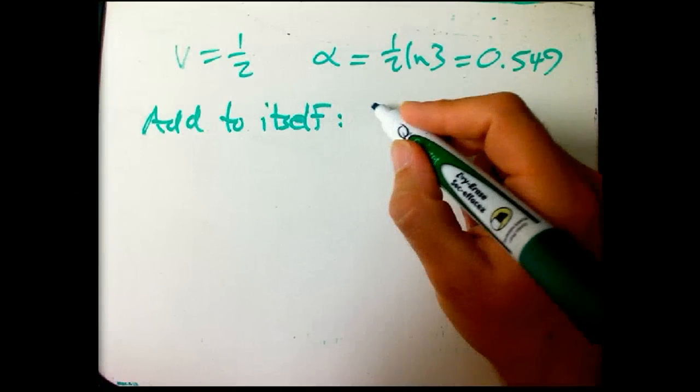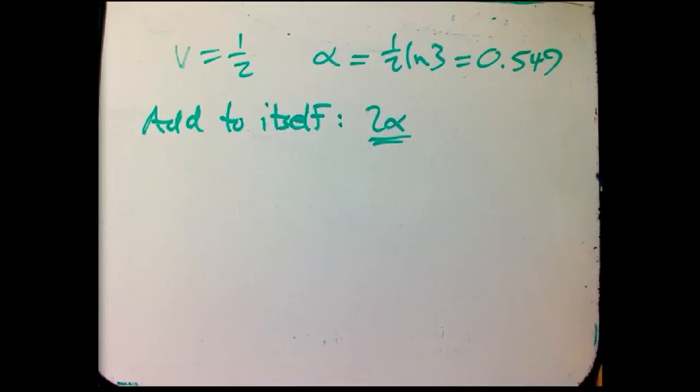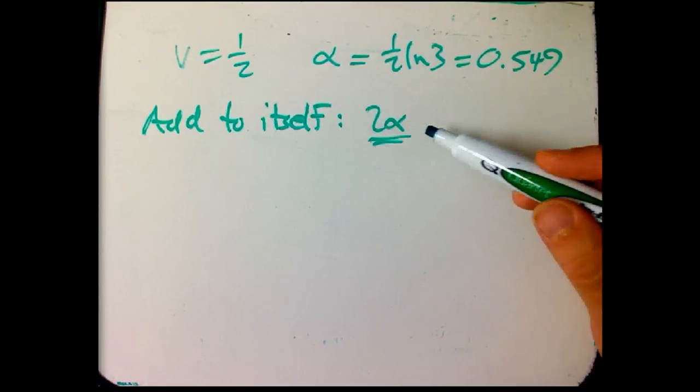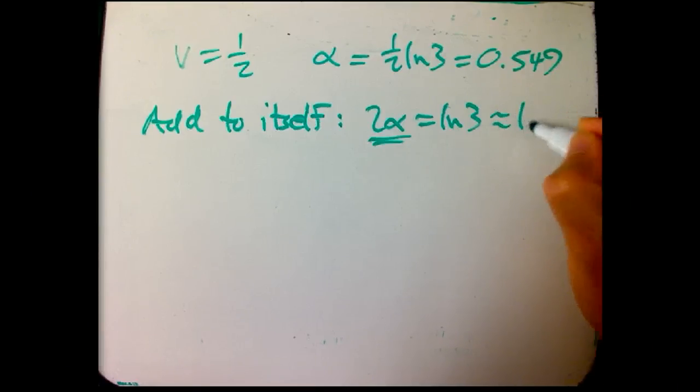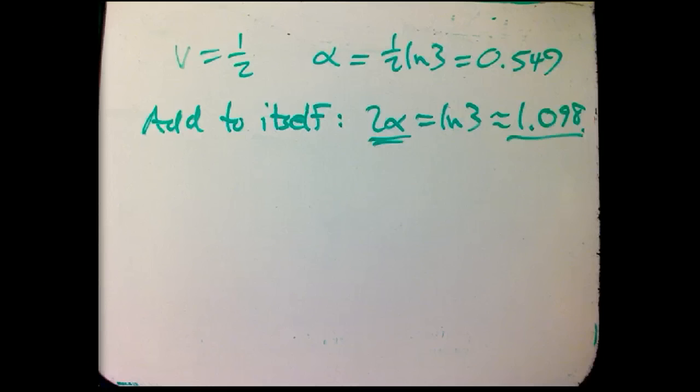Well, we're just going to double alpha. That's the great thing about additivity. You just double it, add it to itself. And so it's actually exactly ln 3, or approximately 1.098. Okay? So there's our new alpha.